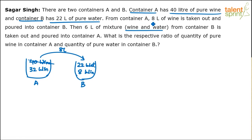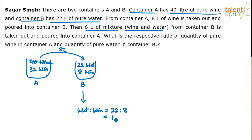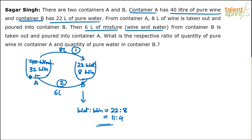Now there's one more step. From container B — which is now a mixture — 6 liters of mixture is taken out and poured into container A. The ratio of water to wine in B is 22:8, which is 11:4. So container B has a water-to-wine ratio of 11:4.